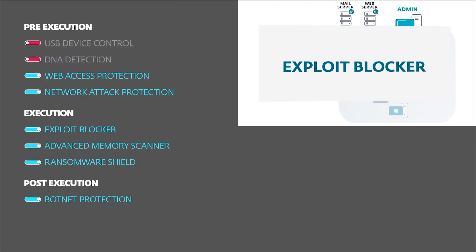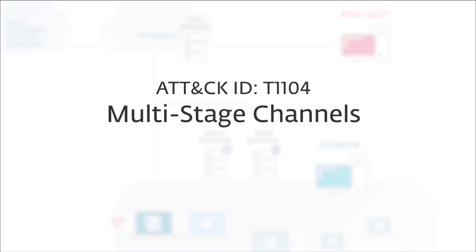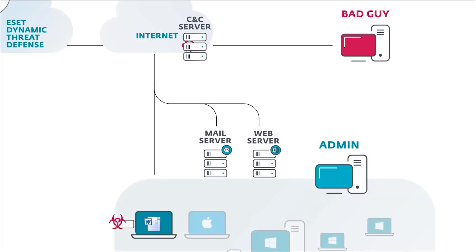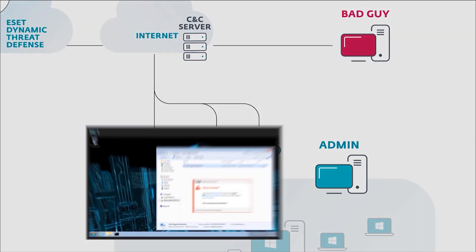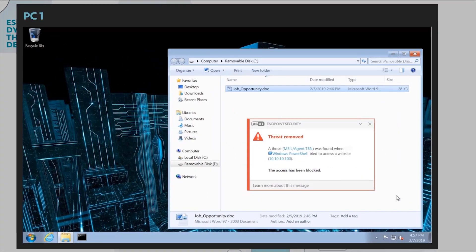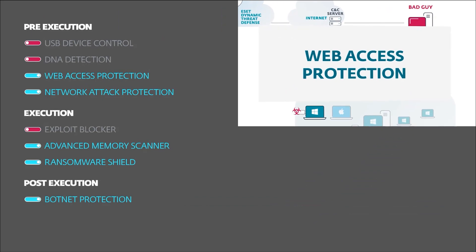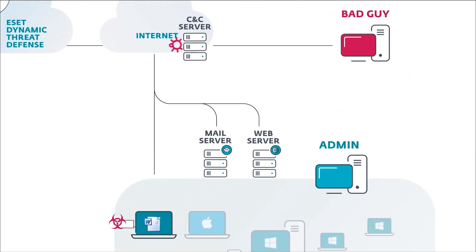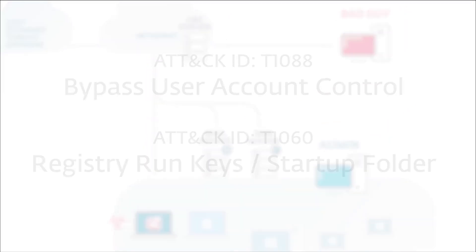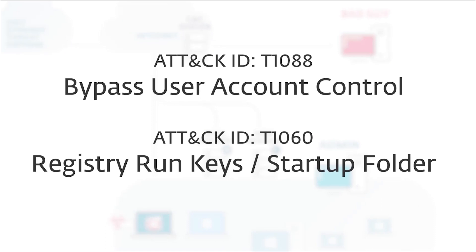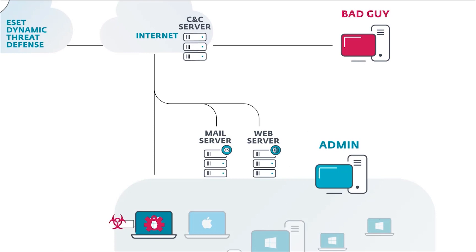If we allow the threat to run past the DNA detection, it would be detected by ESET exploit blocker — a detection layer designed to detect exploits generically, even zero days. If ESET exploit blocker was not in place, the threat would execute and try to connect to its command and control server to download the next stages. This attempt would be blocked by ESET's web access protection layer. If it weren't for web access protection, the malware would continue to run — the first thing it would try to do is elevate its privileges and then establish persistence.